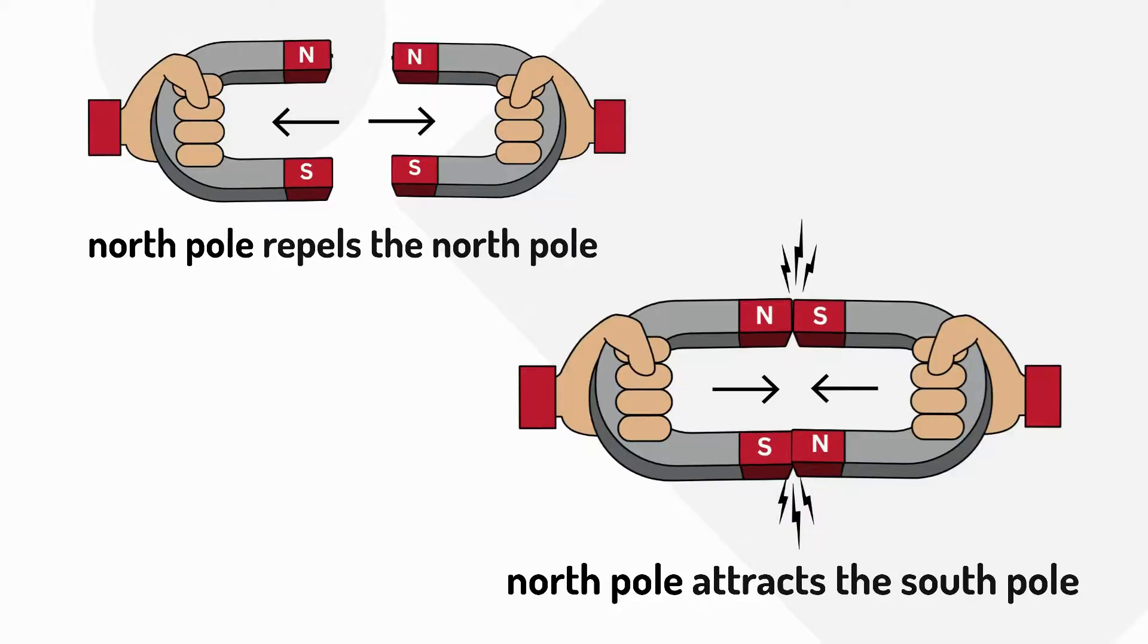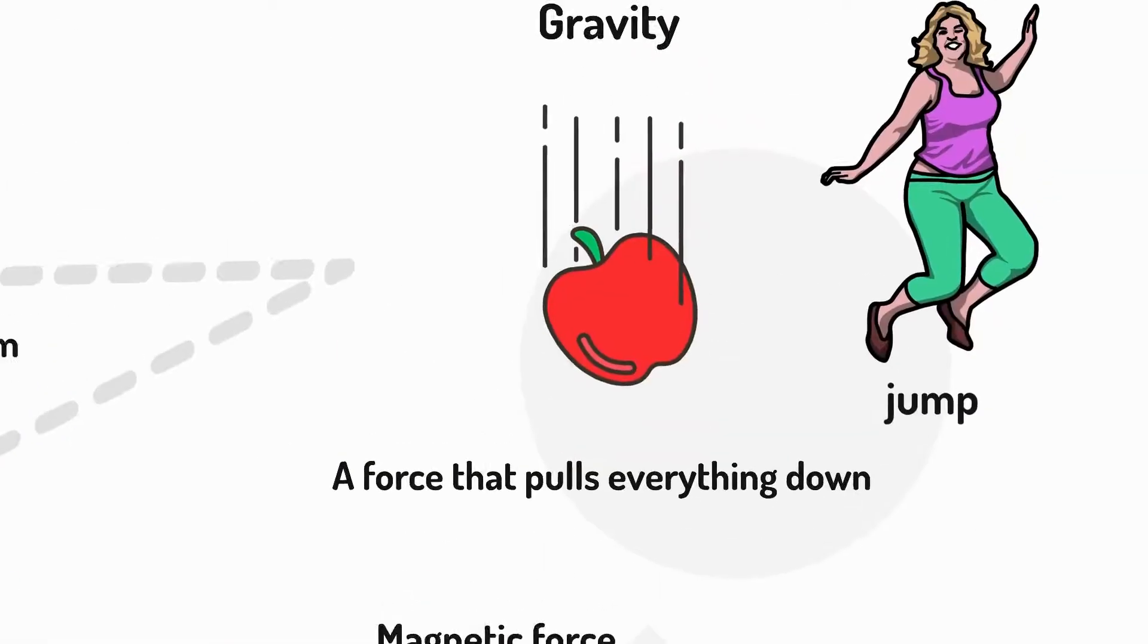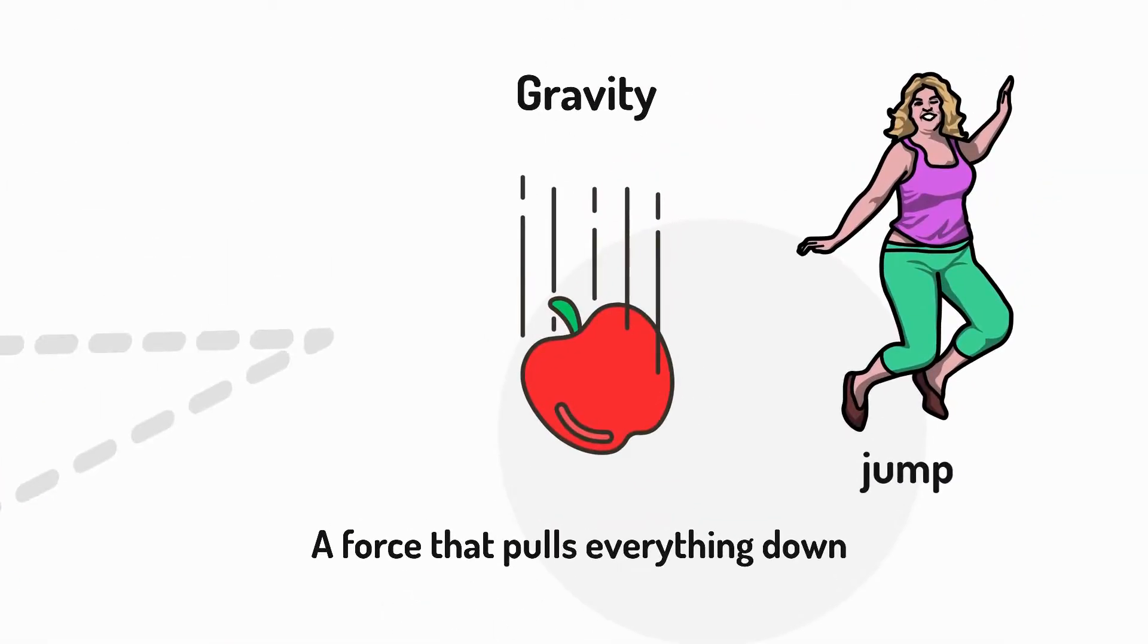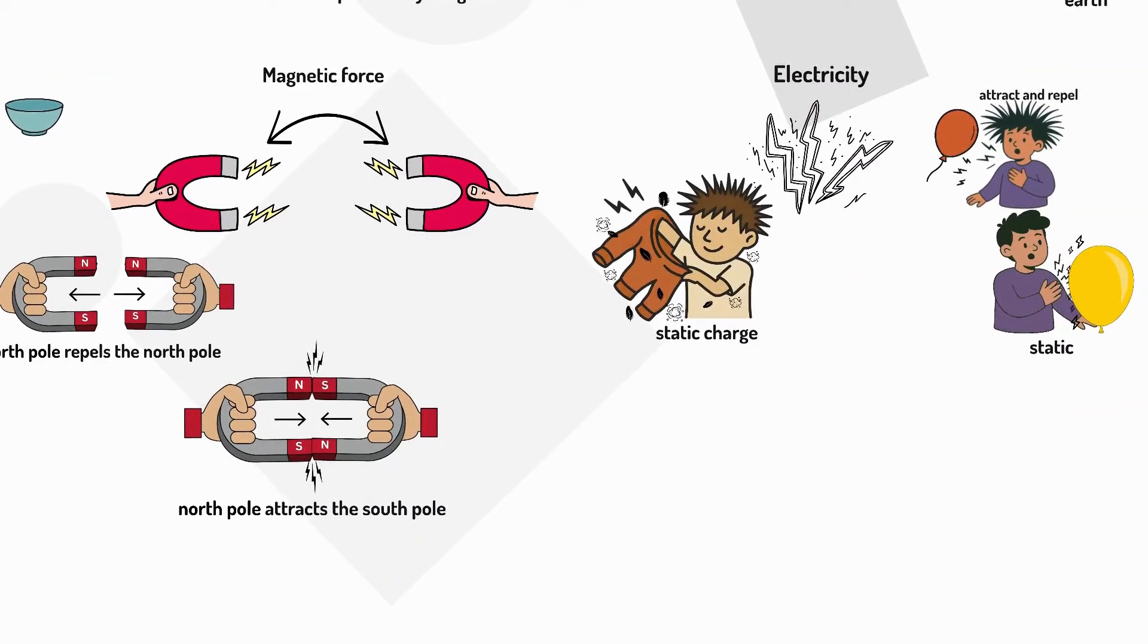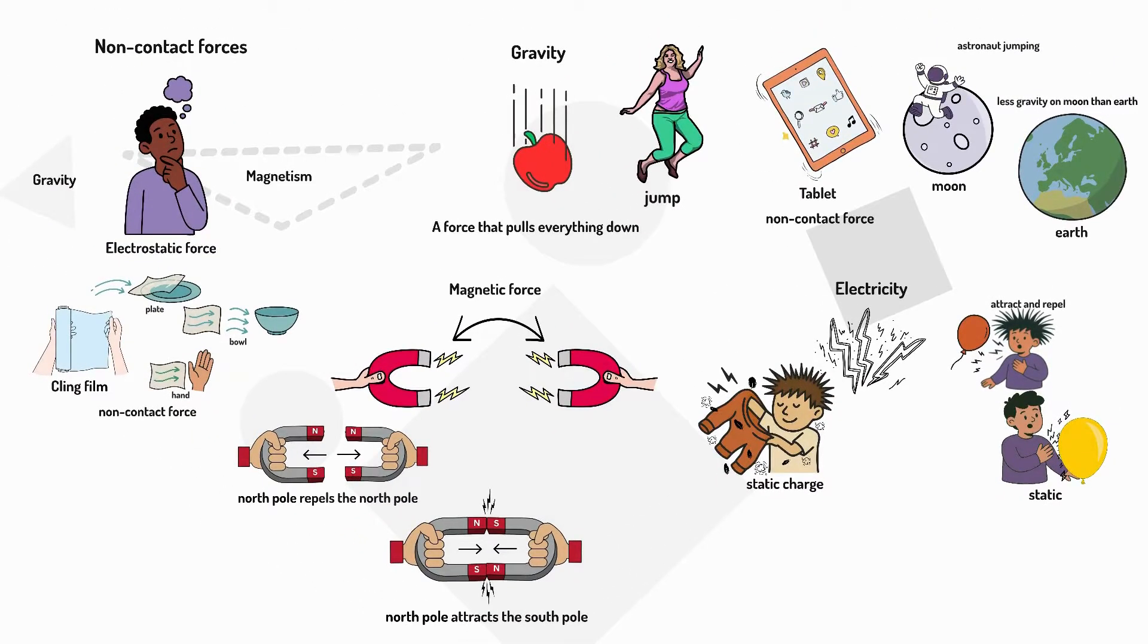Remember, all these non-contact forces work without touching. Gravity only pulls things, while magnets and electrostatic forces can both push and pull. They all work on objects from a distance.